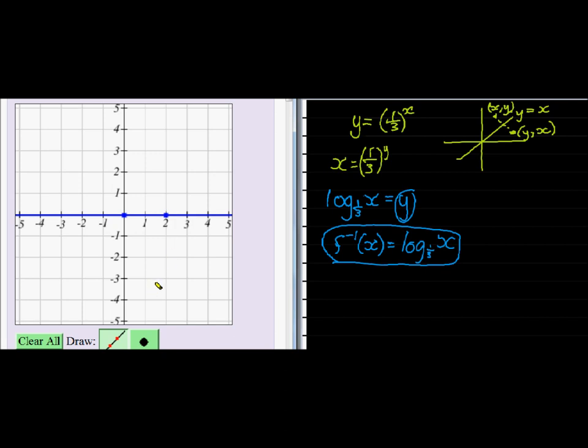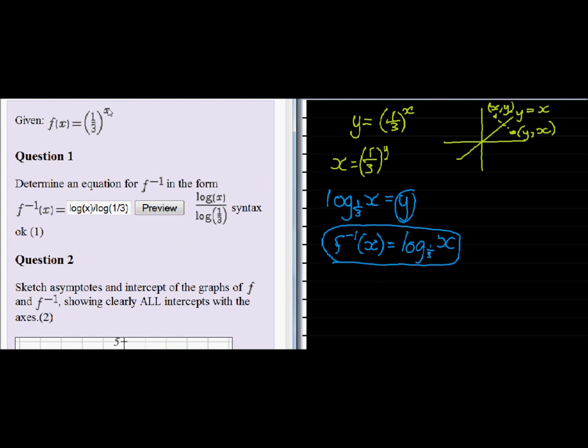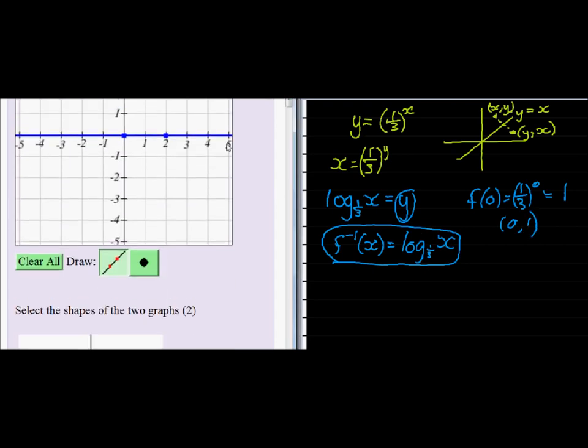Now where will it cut the axis? It will never cut the x-axis, but it will cut the y-axis when x is equal to zero. So when x equals zero, f of zero is a third to the power of zero, and anything to the power of zero is one. So we find that it will cut the y-axis when x is zero and y is one.